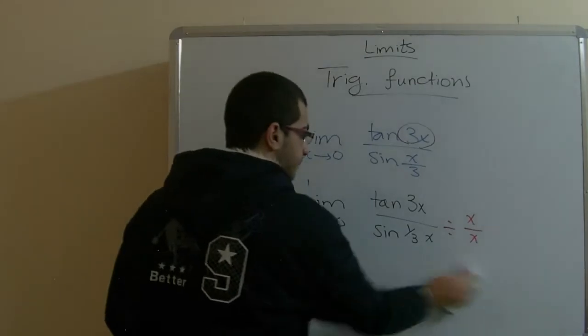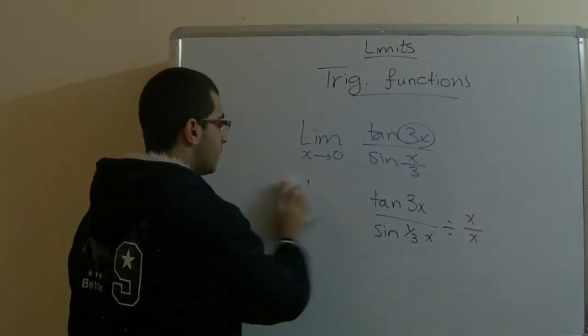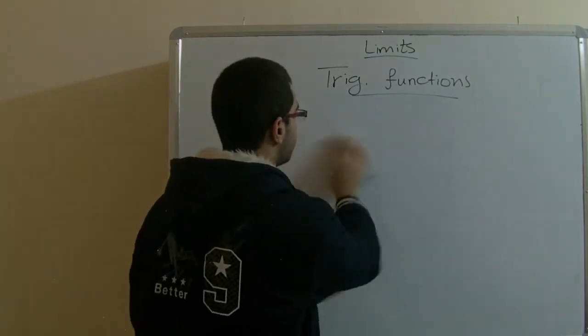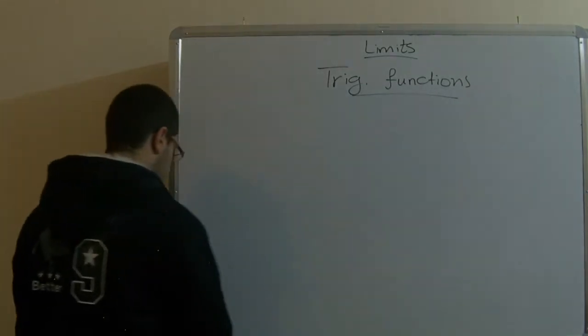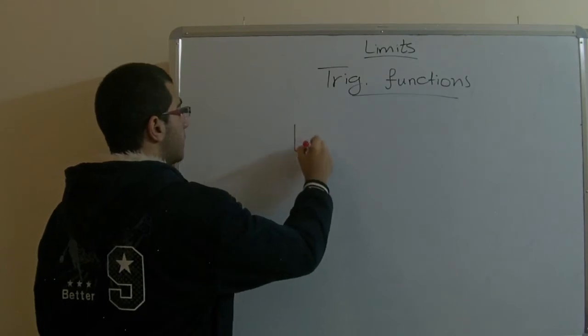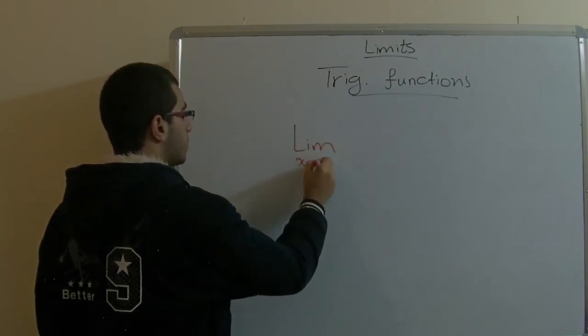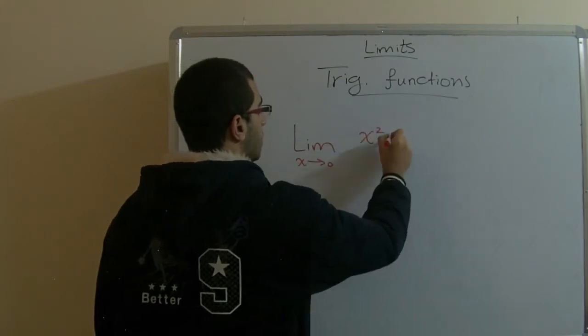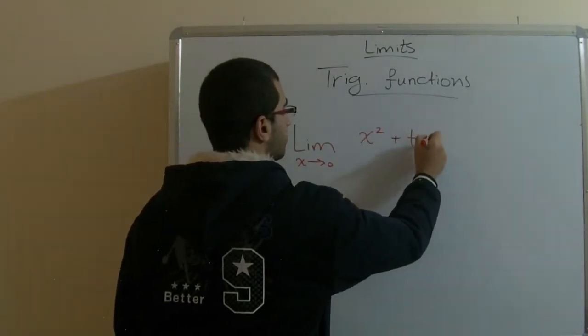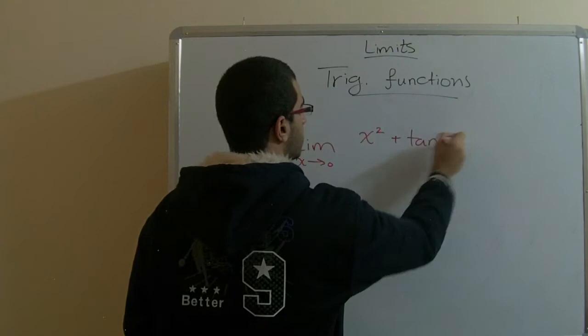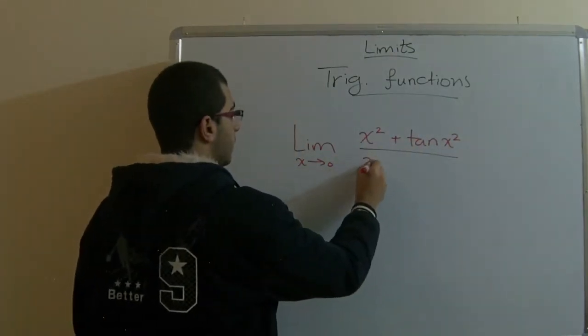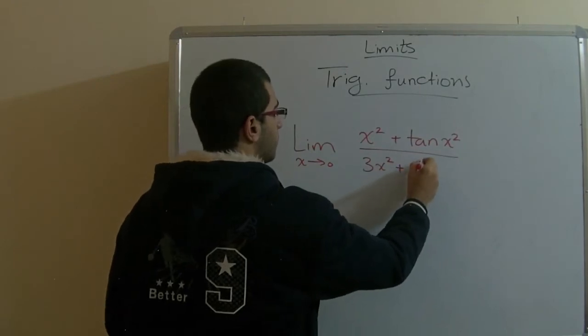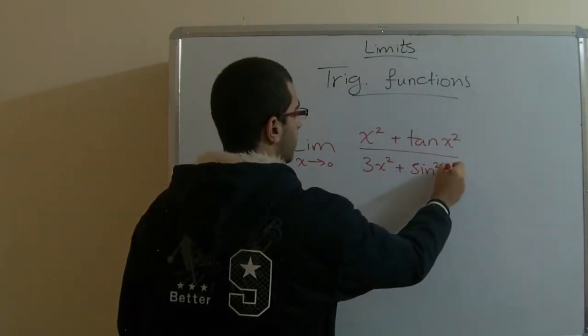Another example is the limit of x approaching zero. So, here x to power 2 plus tan x to power 2 over 3 x to power 2 plus sine square x.